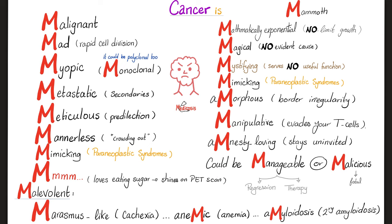Cancer is Magical — there is no evident cause; we have risk factors. Correlation is not causation, so don't say X causes cancer. The only exception: smoking causes cancer — but with anything else we don't have enough evidence to prove causation. Cancer is Amorphous — meaning irregular. Cancer is Manipulative — it's evading your immune system. Cancer likes Amnesty — it stays in your body uninvited, against the will of your immune system.